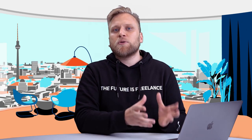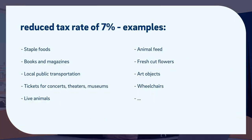The first category of exceptions is the reduced tax rate — sales where the legislature has decided they should be particularly promoted. For example, the majority of foods have a 7% value-added tax, making them slightly more affordable for the end consumer. Another example is education, such as books, magazines, or cultural items like museum or theater tickets, all of which have a 7% tax rate. All such items are listed in the law.